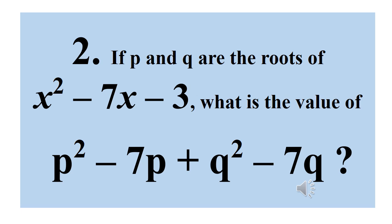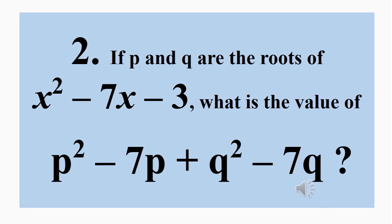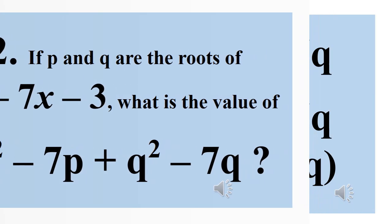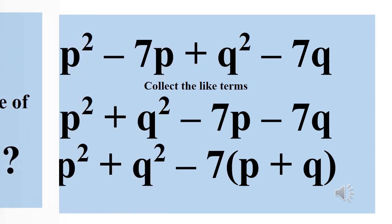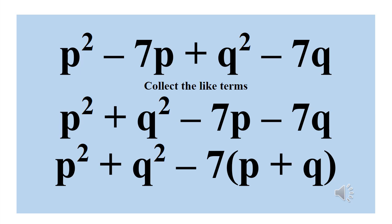The second question: if p and q are the roots of x squared minus 7x minus 3, what is the value of p squared minus 7p plus q squared minus 7q? What we are going to do is collect like terms — those with the same exponent together — so we have p squared plus q squared, then minus 7p minus 7q.